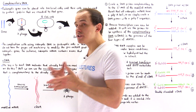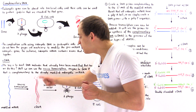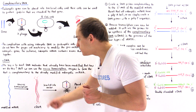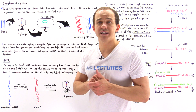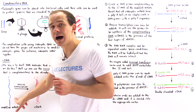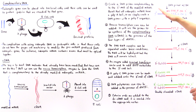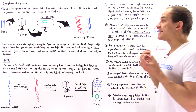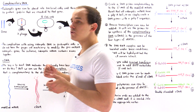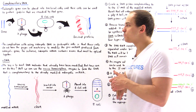What exactly are the steps involved in producing the complementary double-stranded DNA molecule that is complementary to this modified mature mRNA? Let's look at the following seven steps that describe how we can produce this double-stranded complementary DNA molecule.